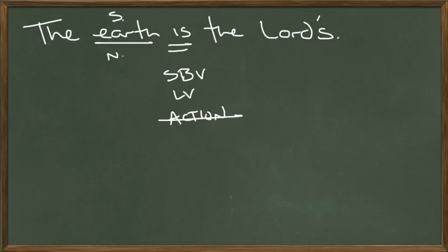It's not showing any action, so that's clear. So is it a linking verb, or is it a state of being verb? If it's a linking verb, it can be replaced with an equal sign. Can we replace it with an equal sign? The earth equals the Lord's. Nah, not really. Can we replace it with the word exists? That's a good test for whether it's a state of being verb. If we can replace it with the word exists, there's a good chance that it's a state of being verb. The earth exists as the Lord's. Yeah, if we throw in the word as, it works. So this is a state of being verb.